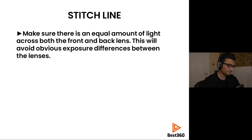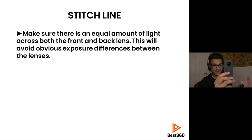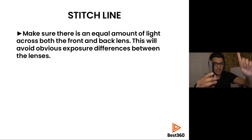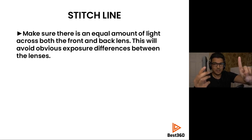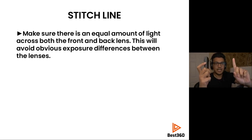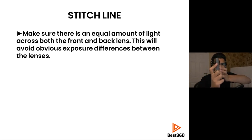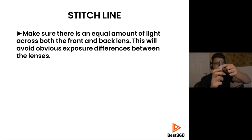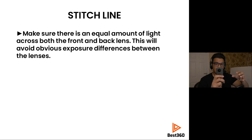Regarding stitch line positioning: which direction should your 360 camera face when taking a photo? The answer matters. The best way is to position the stitch line towards the sun. This ensures both lenses get an equal amount of light — if the sun was just hitting one lens, you'd have one lens that's really bright and one that's really dark, and you'd see the exposure difference at the stitch line. Point the stitch line towards the brightest light source and the light will spread equally across both lenses, giving you a much more seamless stitch.